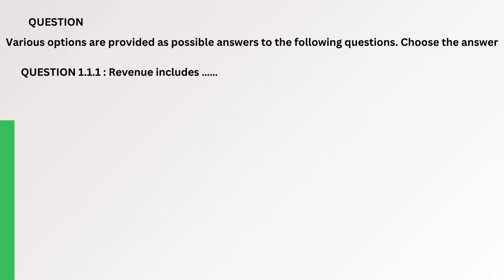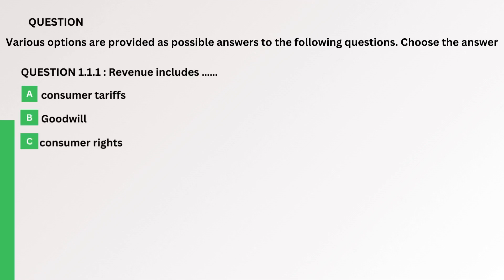Question. Revenue includes. A. Consumer tariffs. B. Goodwill. C. Consumer rights. D. Shareholders' equity. The correct answer is A.